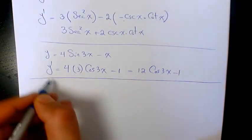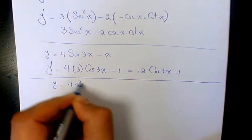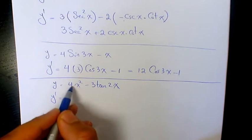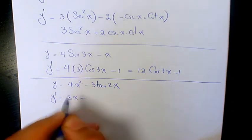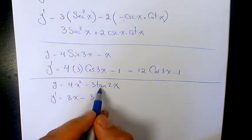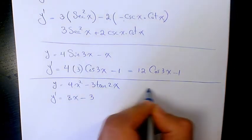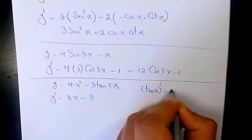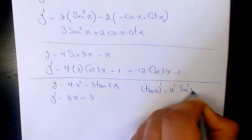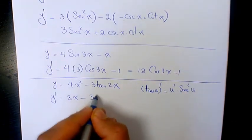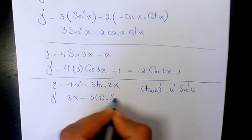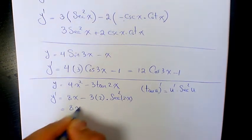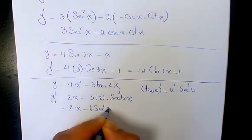Next example: y equals 4x squared minus 3 tan 2x. Y prime — the derivative of 4x squared is 8x, minus 3 times the derivative of tan 2x. The derivative of tan u, where u is a function of x, is u prime times secant squared u. So that will be 3 times 2 times secant squared 2x, giving us 8x minus 6 secant squared 2x.